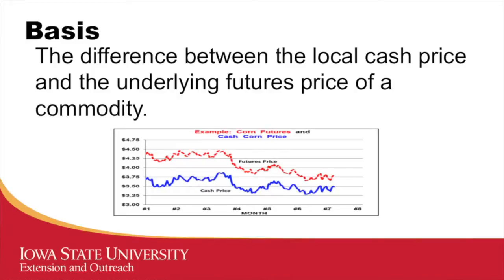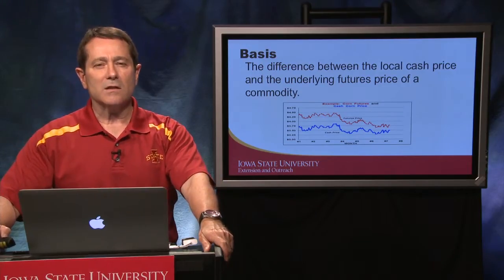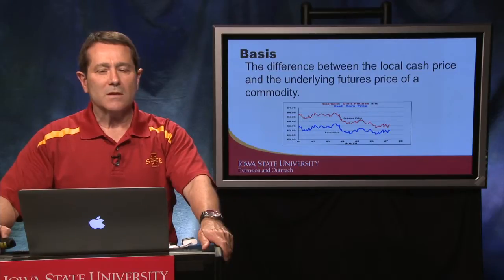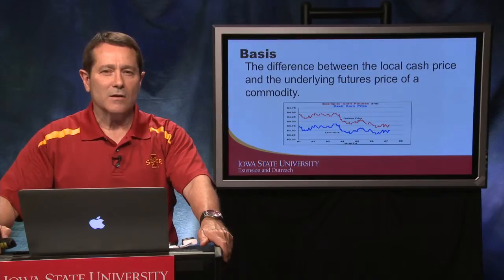Basis is the difference between the local cash price — the blue line in this graphic — and the underlying futures price of a commodity, the red line. Notice that the difference between the two we define as basis. The basis is typically wider at harvest than it is as we get further into the marketing year. It's also important to recognize that basis tends to be a negative number, as cash prices in most of the Corn Belt are less than the futures price.